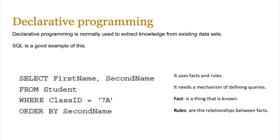The concept of declarative programming is normally used when we want to extract knowledge from existing data sets. SQL is a good example of this because it uses facts and rules. Facts are a thing that is known and rules are the relationships between the various facts. In SQL you don't actually tell the compiler what to do step by step — you simply say we want to find the first name and second name which is in the student table where the class ID matches 7a, and output the results by order of second name. We don't specifically tell the compiler how to do this; we just define what we want and the compiler takes care of the rest.